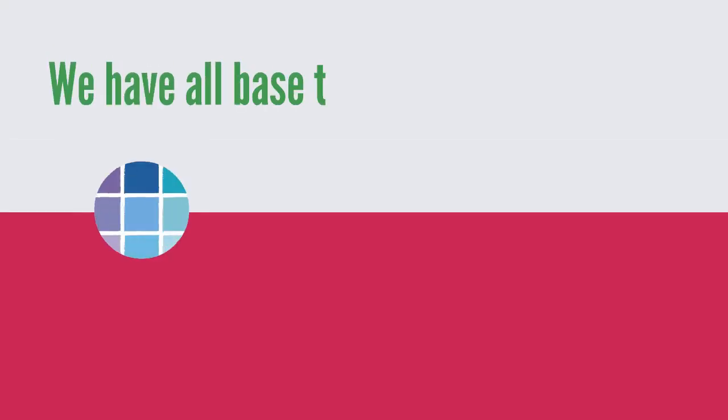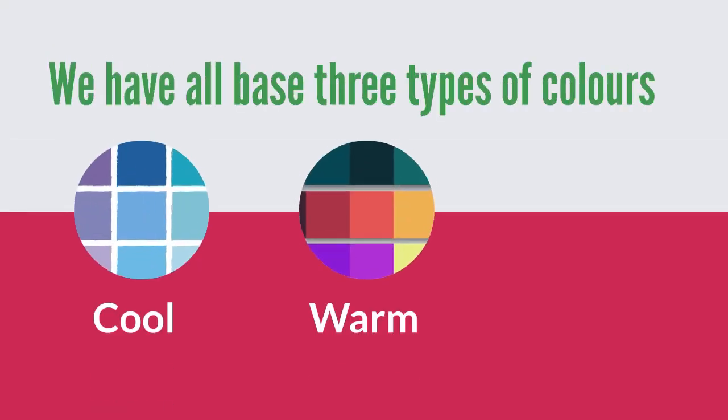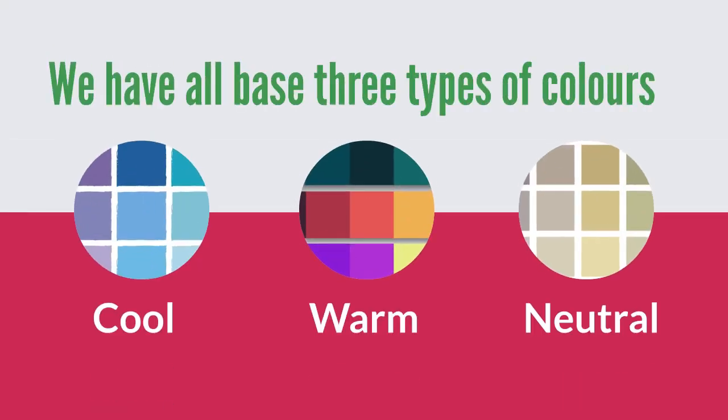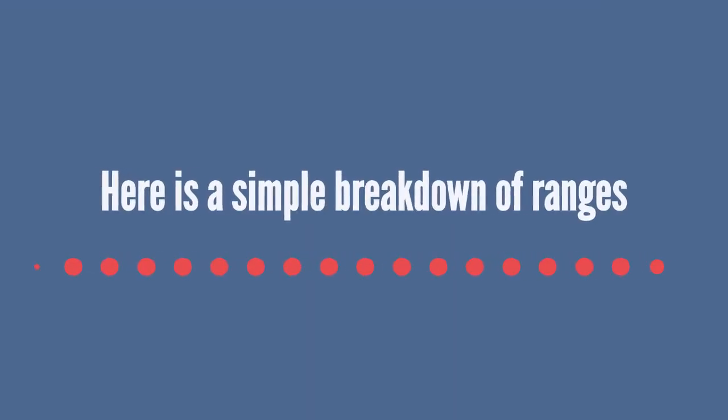We have all based three types of colors: cool, warm and neutral. Here is a simple breakdown of ranges.